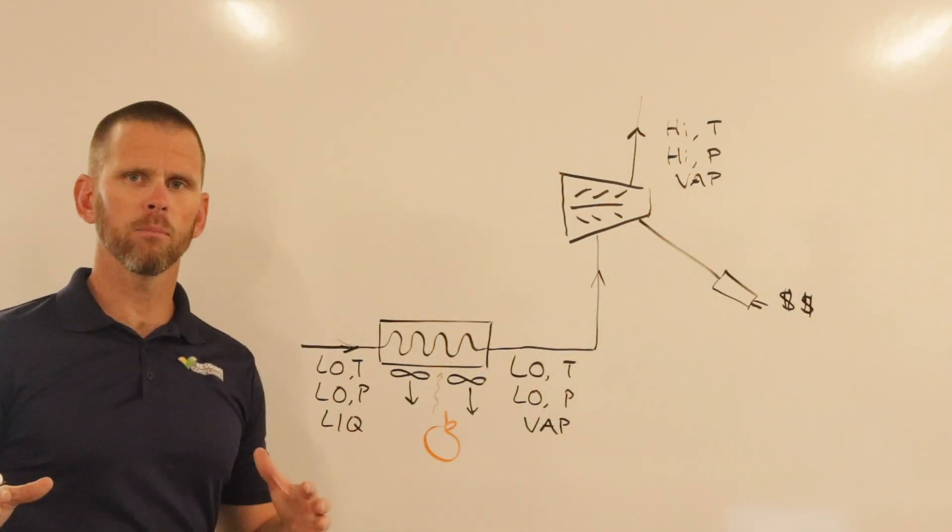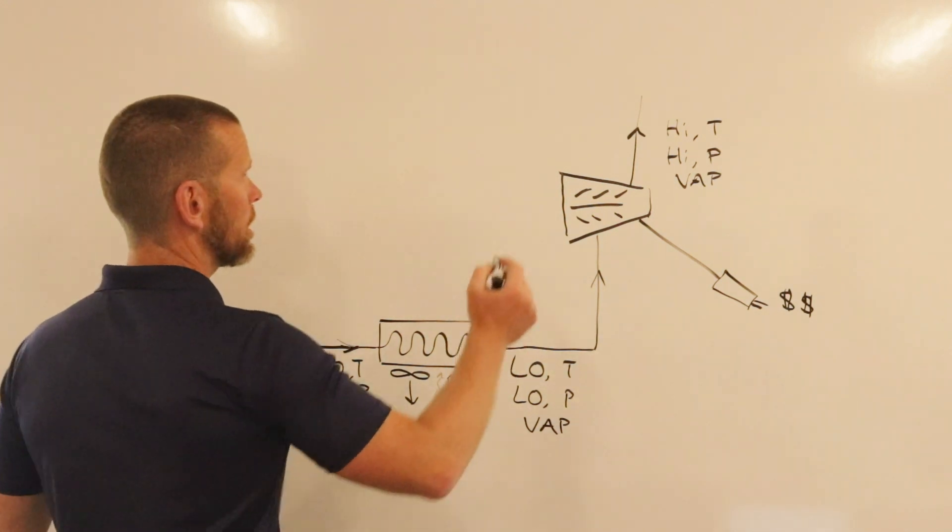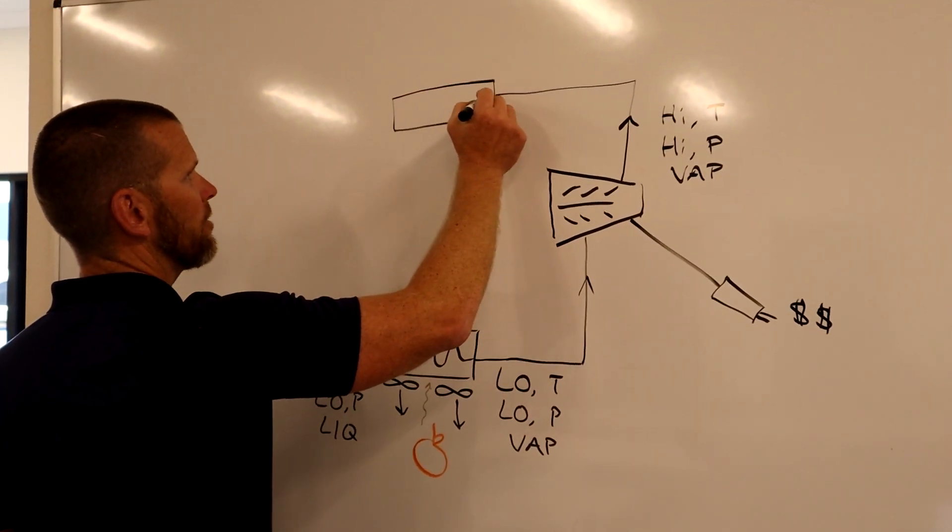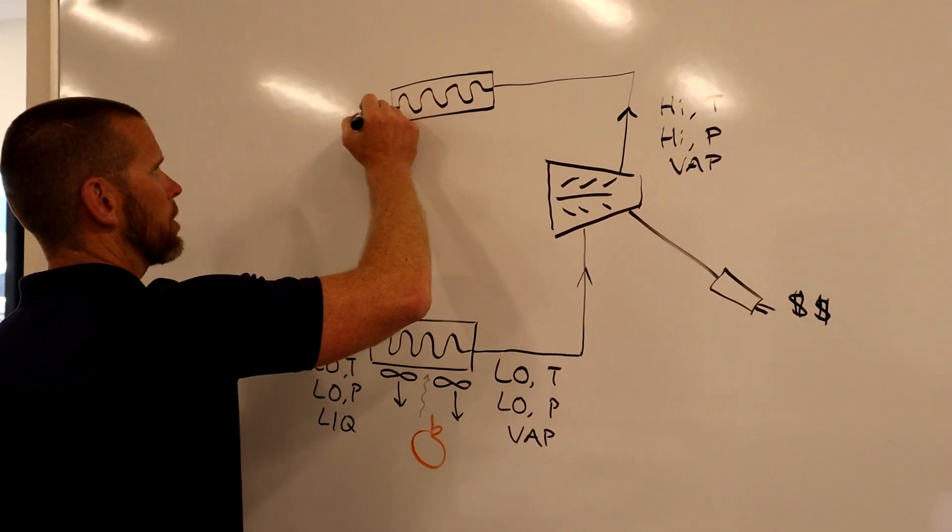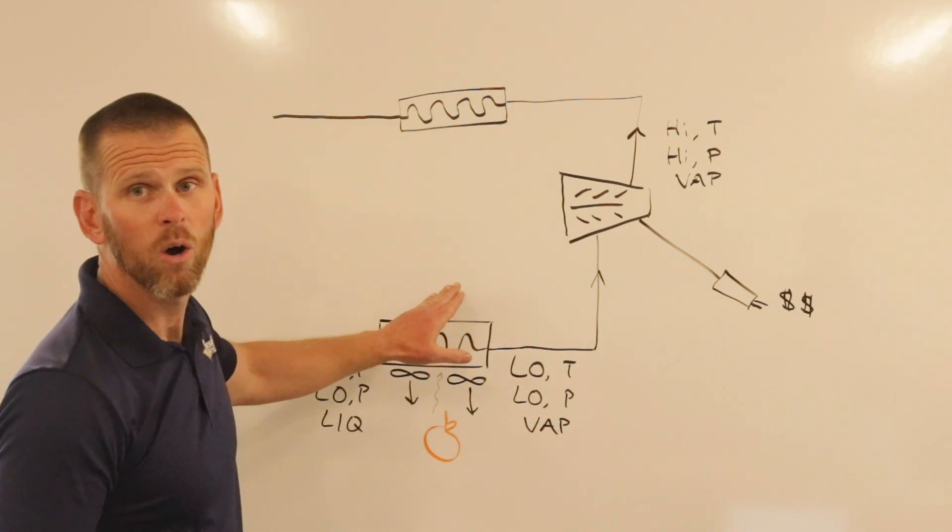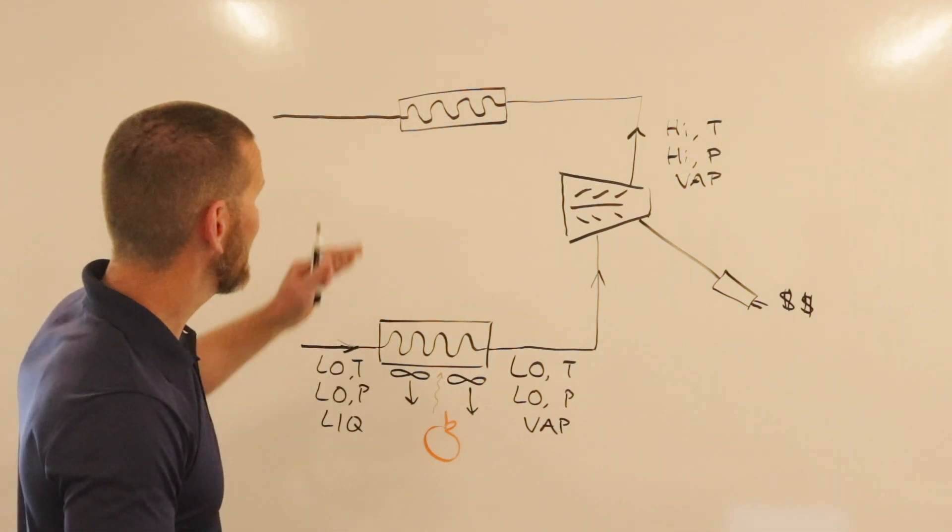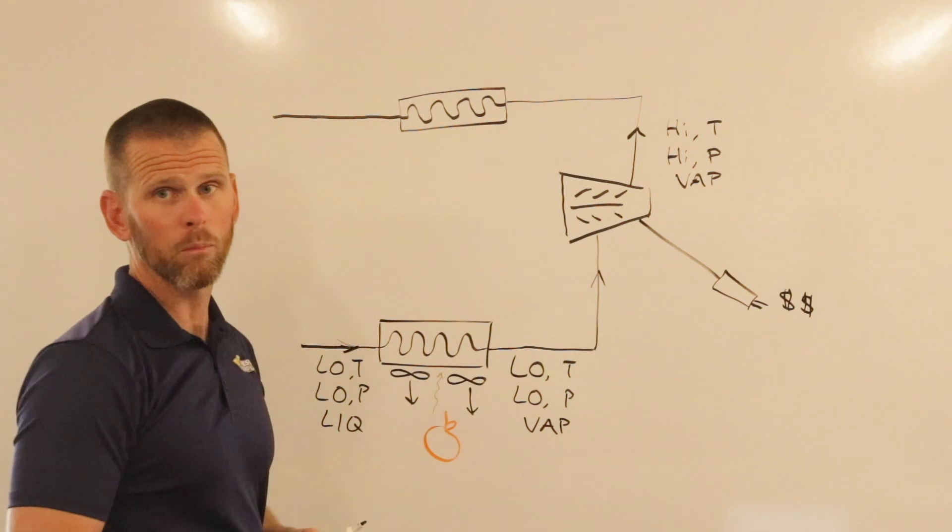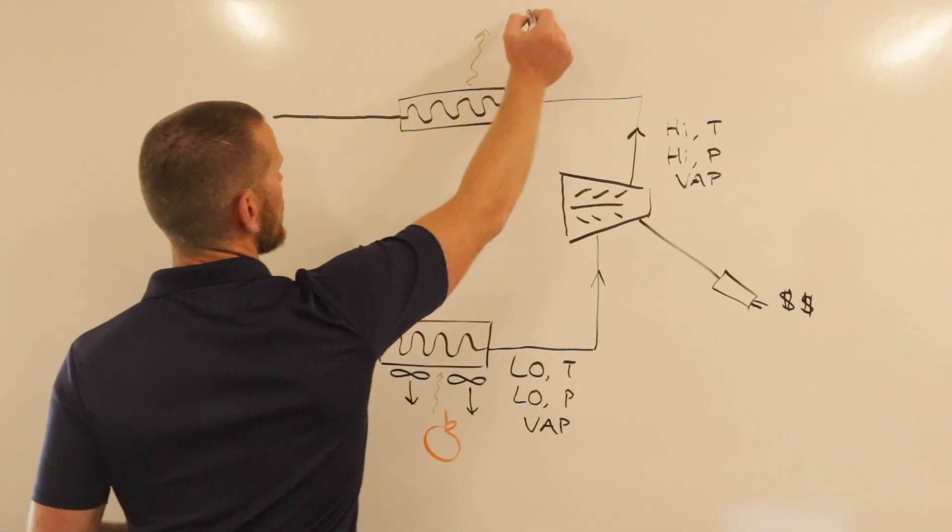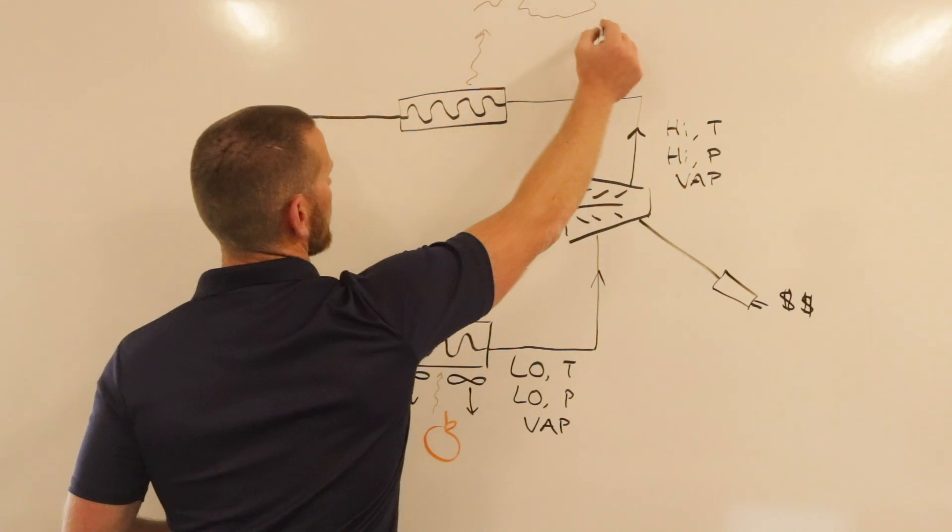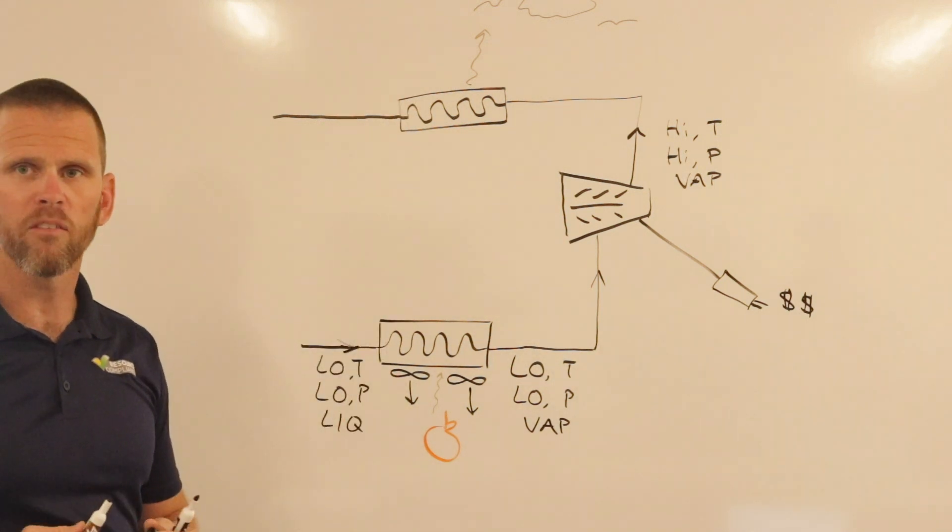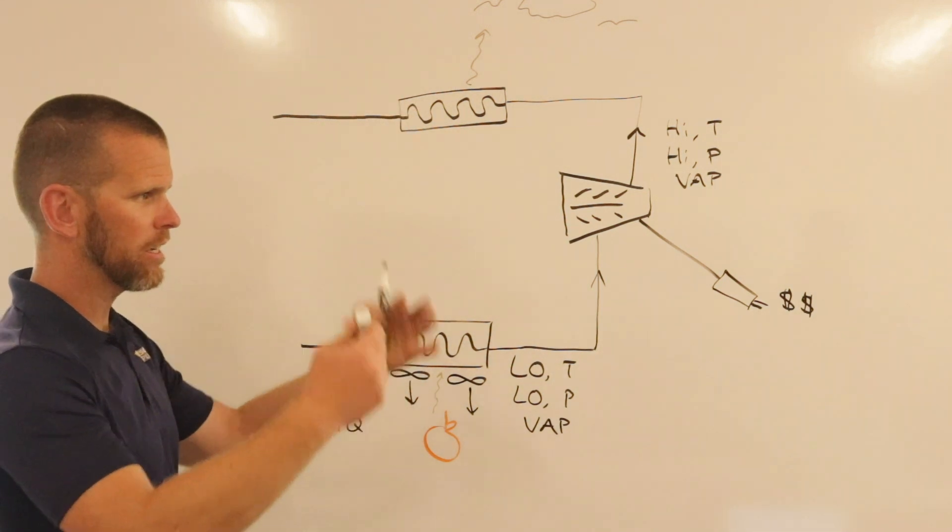We leave the compressor as high temperature, high pressure vapor. What do we do with that? We send it through a second heat exchanger called a condenser. Just like the evaporator, this is exchanging heat. The major difference is the direction of heat transfer. In the evaporator, heat from our orange was absorbed into the ammonia. At the condenser, we're not absorbing heat - we're rejecting it. Where do we reject the heat? In most cases, we reject it to atmosphere. We're sending that heat to a place where it can do no harm, typically the ambient conditions outside.